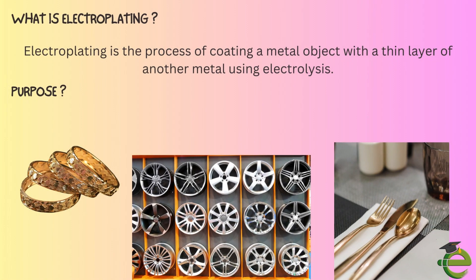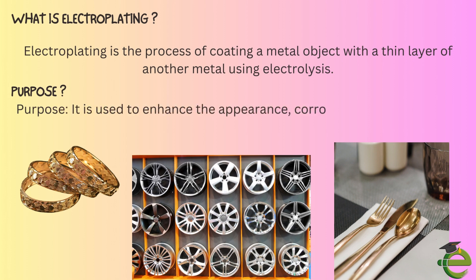Electroplating is the process of coating a metal object with a thin layer of another metal using electrolysis. Its purpose is to enhance the appearance, corrosion resistance, and durability of metal objects.